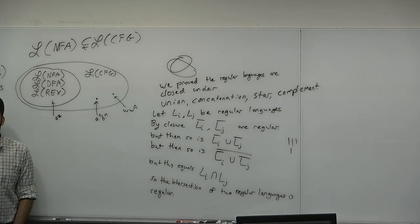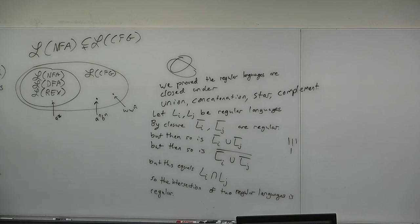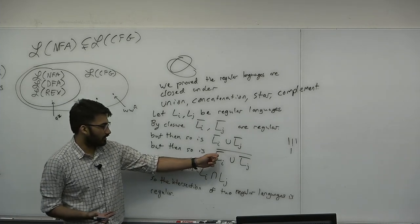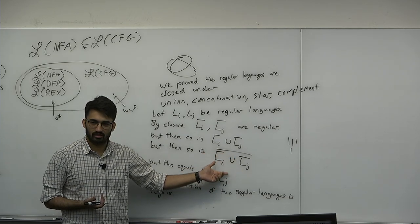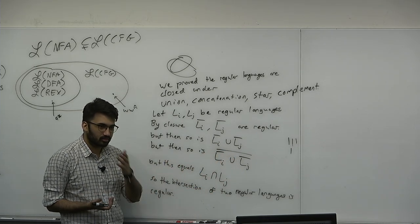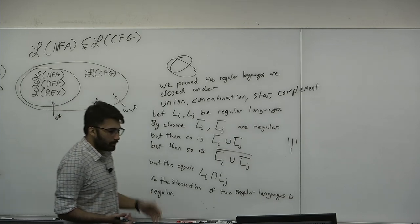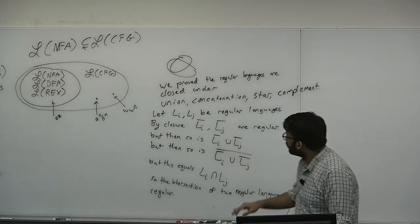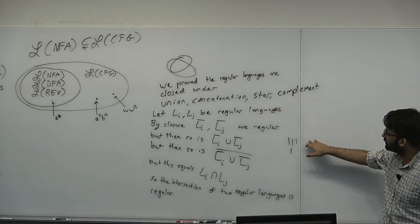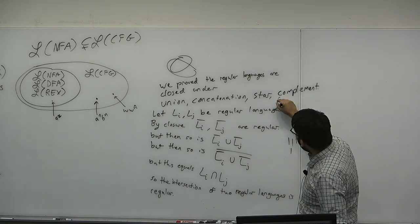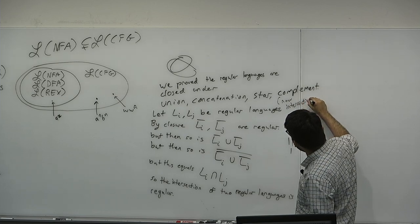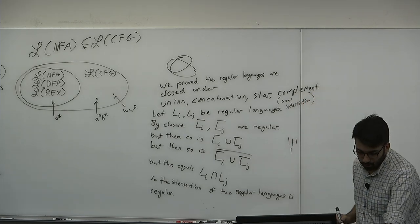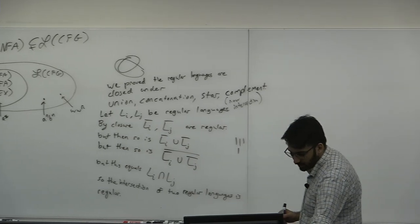That's really important. The key idea: if it's closed under complement and union, this is just complements and unions, so it's just intersection — therefore it's closed under intersection. So the regular languages are closed under union, concatenation, star, complement, and intersection. But you can also use closure to prove certain languages are not regular.